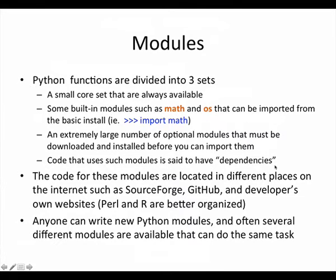BioPython does have dependencies - it's dependent on numerical Python, numpy, and probably some other things. Unfortunately, Python is not a monolithic toolkit like R, which is nicely organized in two or three repositories. Python code is spread all over the place - some in GitHub, some in SourceForge, and BioPython has its own website. Anyone can write new Python modules, and very frequently you'll find several modules available to do almost the same task.